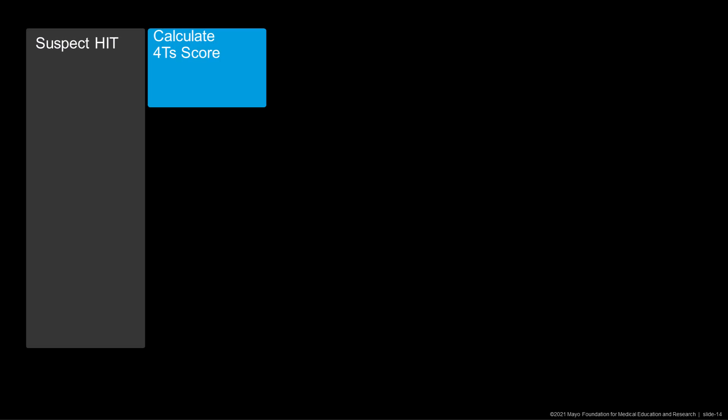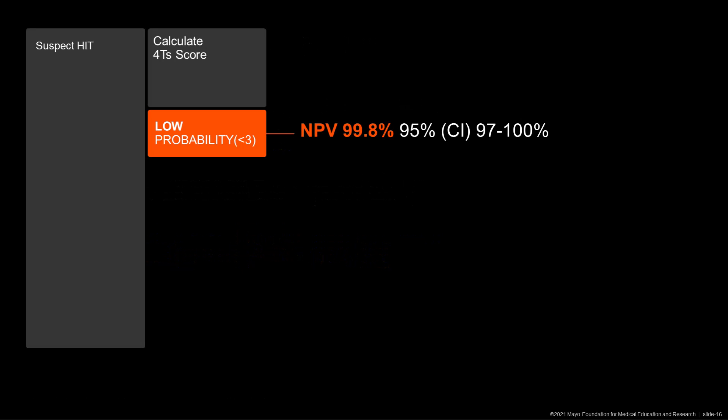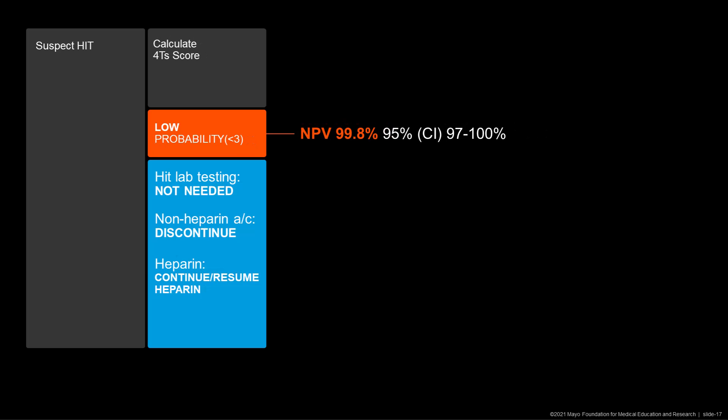The first step in the diagnostic process for suspected HIT is to calculate the 4Ts score. A systematic review and meta-analysis concluded that the negative predictive value for a low probability 4T score was 99.8%. However, the positive predictive value for a non-low probability — in other words, a moderate or high probability — was between 14 to 64%. A low clinical pretest probability therefore warrants avoiding laboratory testing, and if a non-heparin anticoagulant like a direct thrombin inhibitor was initiated, it can be discontinued and heparin may be continued or resumed.